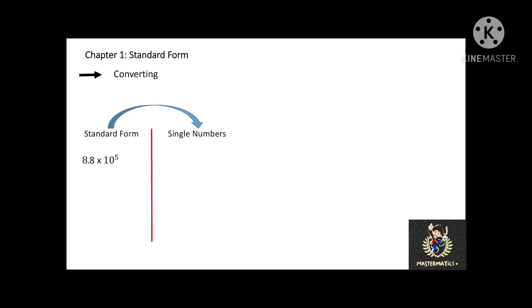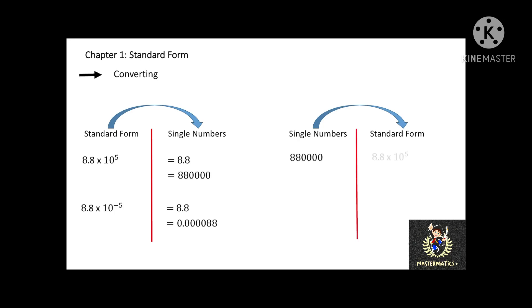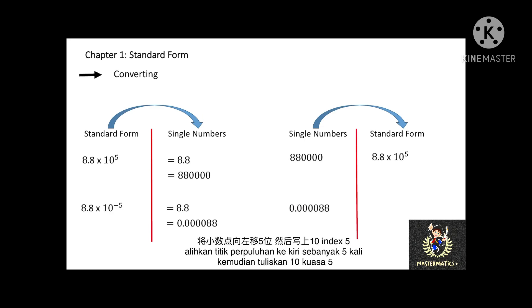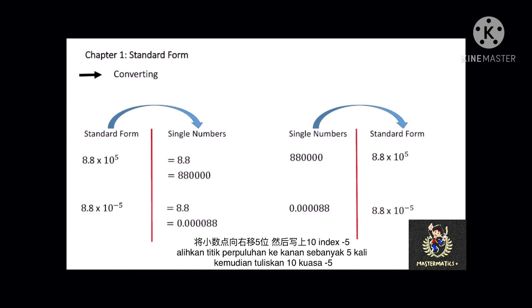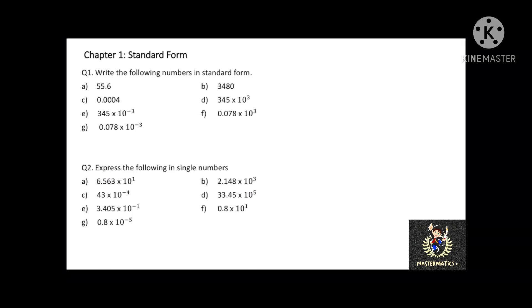Next, converting between standard form and single numbers. To convert 8.8 × 10⁵ to a single number, write 8.8 and move the decimal point 5 places to the right. For 8.8 × 10⁻⁵, write 8.8 and move the decimal point 5 places to the left, giving 0.000088. To convert single numbers to standard form: for 880,000, move the decimal point 5 places to the left to get 8.8 × 10⁵. For 0.000088, move the decimal point 5 places to the right to get 8.8 × 10⁻⁵. You may pause the video and try the practice question.